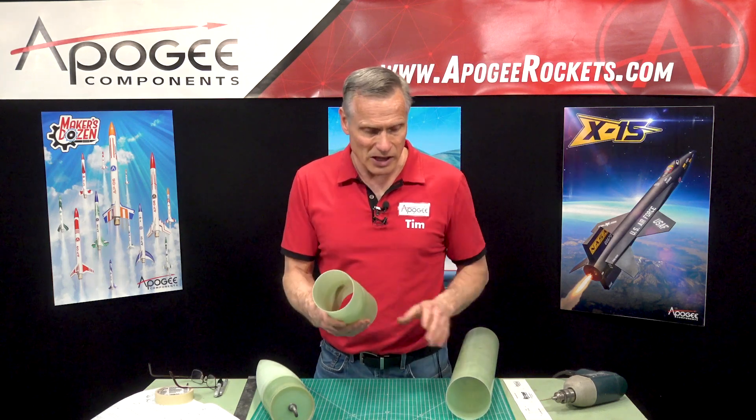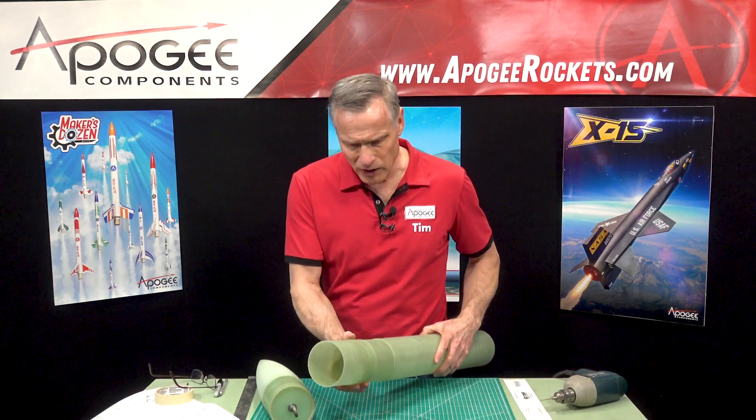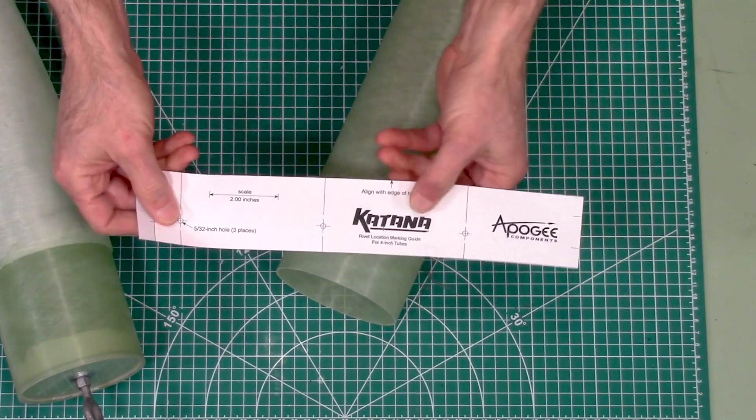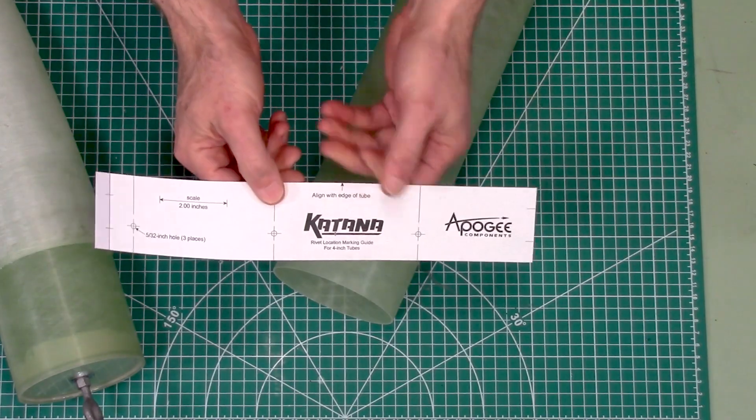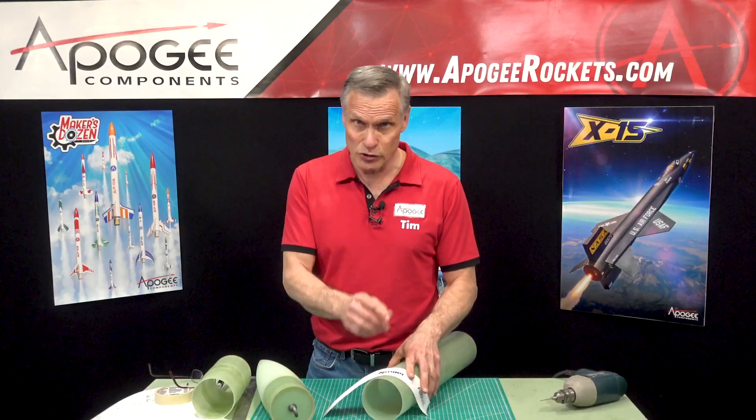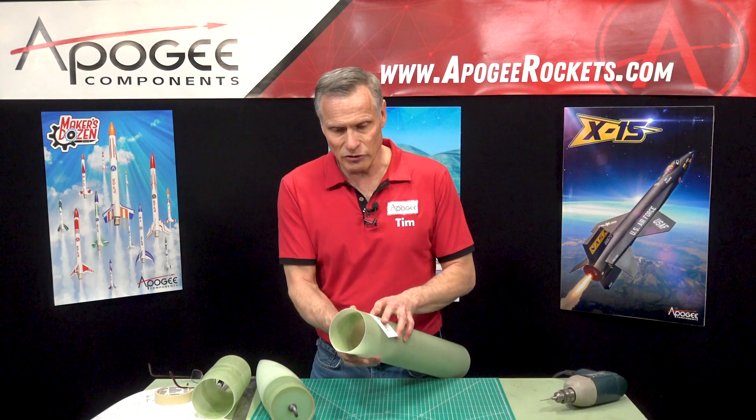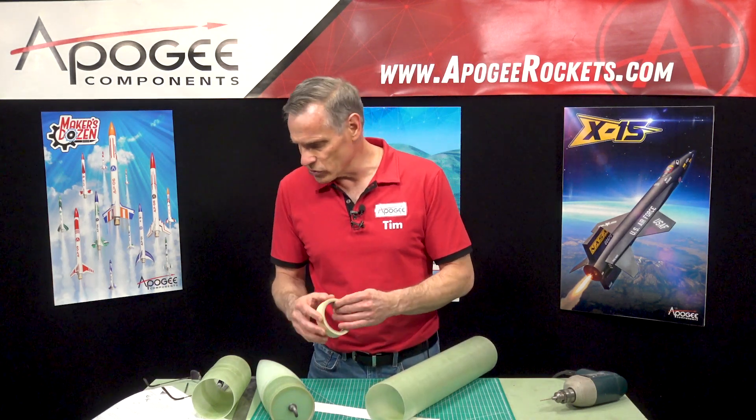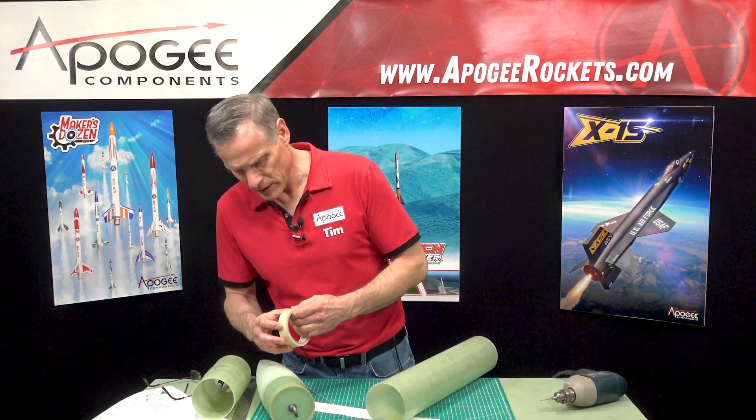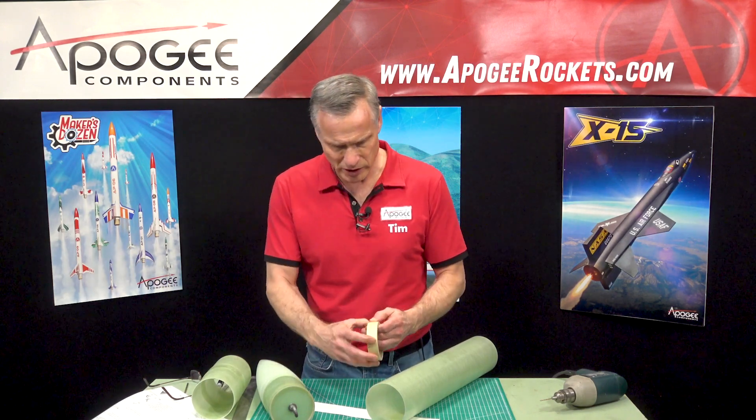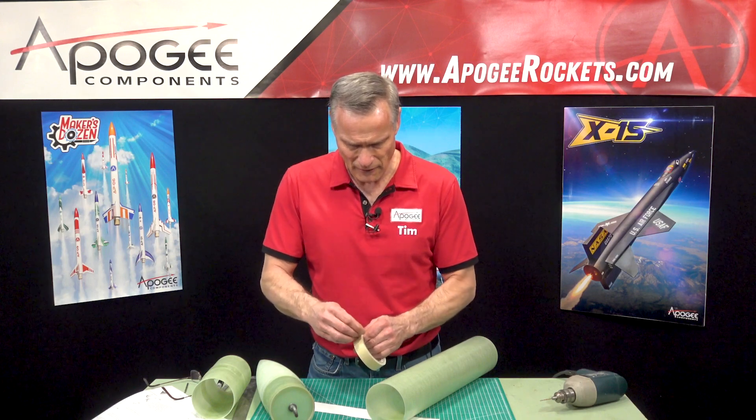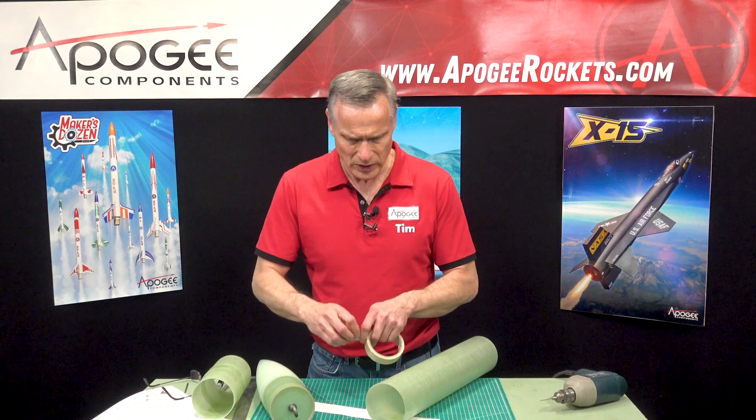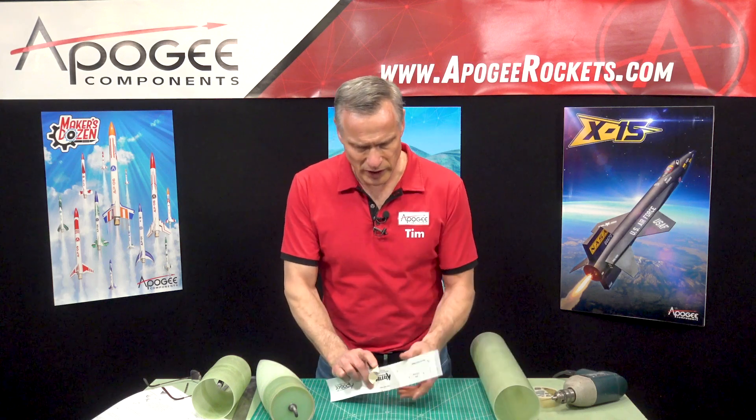So we're going to take the cutout and mine doesn't say level 2 on it, mine says Katana because it's the same diameter, but yours will say level 2 on it and it'll be in the instructions and you'll cut it out. You're going to wrap it around the tube. I need to find the end of the tape here. There it is.